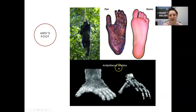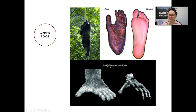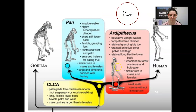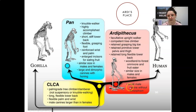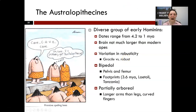Looking at Ardi's foot, it is definitely much closer to the genus Pan, which is chimpanzees, versus the genus Homo, which is us — you can see that very large divergent big toe. The hands are also very chimpanzee-like. The hips, however, start to show anatomical changes more suggestive of bipedalism. Phylogenetically, we see an earlier split between gorillas and chimpanzees, then a split into the genus Pan and the genus Ardipithecus, making Ardipithecus one of our direct ancestors, though with much more retention of ancestral traits.